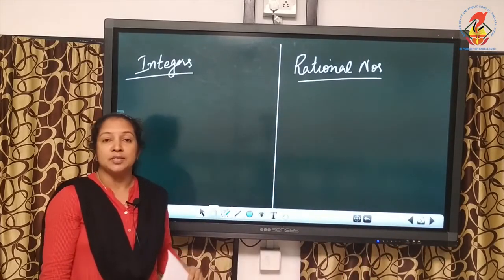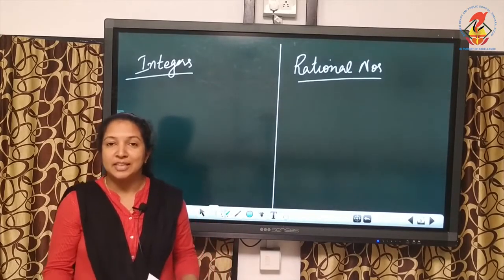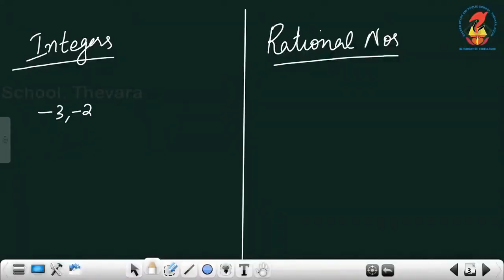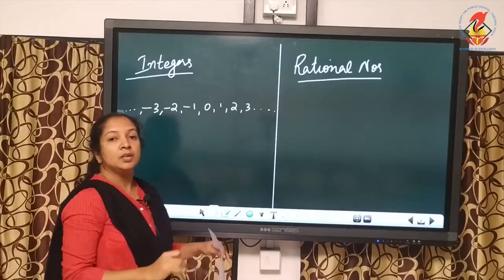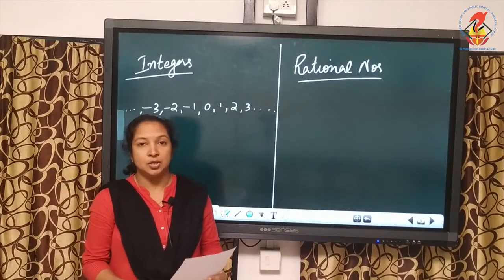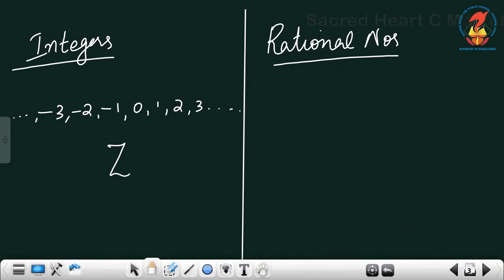Next are integers. Integers means positive numbers, negative numbers, and 0 — for example, -3, -2, -1, 0, 1, 2, 3, etc. Positive and negative numbers together with 0 are known as integers. We can use the symbol Z to represent the collection of integers.